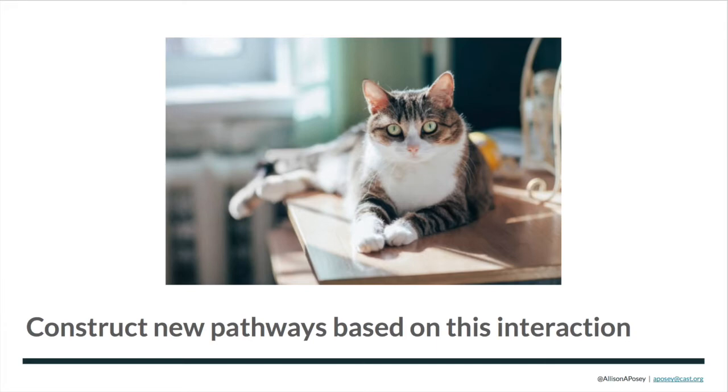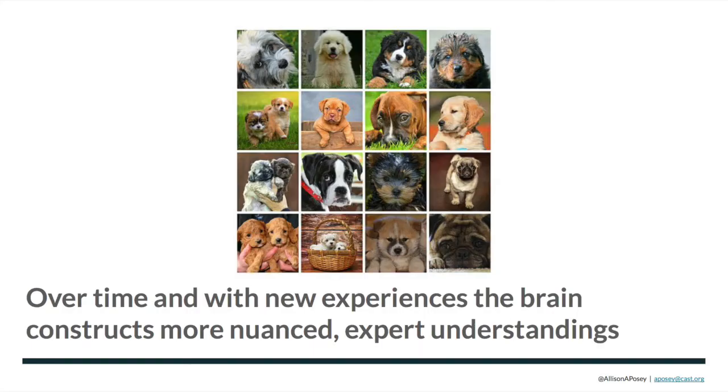So initially you didn't have a whole lot of experience with dogs. So the next time you saw another furry four-legged creature with a tail, such as a cat, you may have tried to play catch with it, you may have tried to pet it. And when it meowed and licked its fur and snubbed you and walked away, you started to construct another understanding of this new creature in the environment and you started to label it cat. So over time and with more experience, you began to gain new understandings of your environment and your brain literally started to construct more nuanced expert neural networks based on your interaction with the environment.